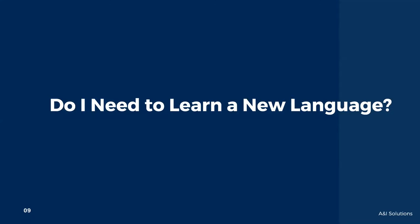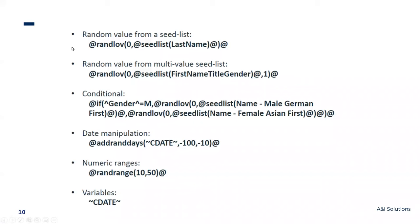Do you need to learn a new language? No, you do not. TDM understands whatever model you tell it to use — Oracle, SQL, Teradata, whatever it is. The data painter has a small regex-like syntax using the at-sign. For example, at-random list of values, seed list, last name — it's that simple. Here's an example using multiple columns from a seed list: random list of value, seed list, first name, title, and gender — they have that relationship.